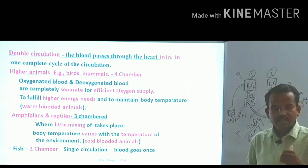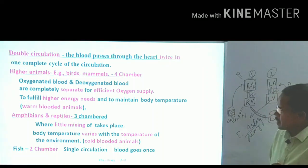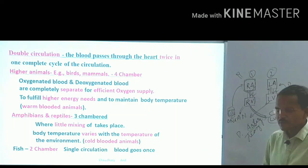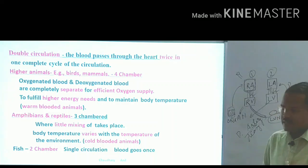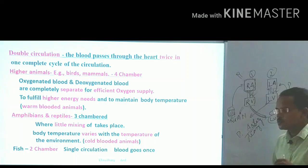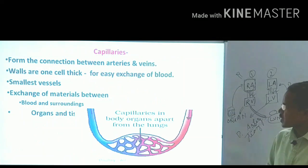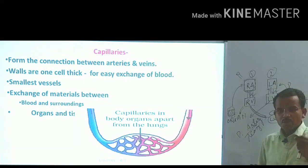In fish, there are only two chambers, and blood circulates only once. This type of circulation is called single circulation — blood passes through the heart only one time.